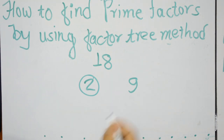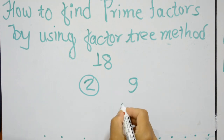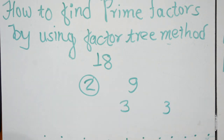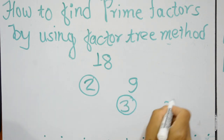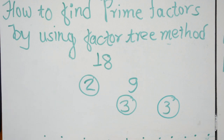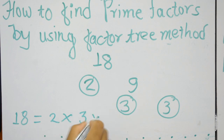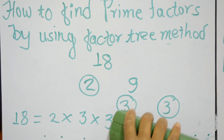9 is not a prime number, so again we have to write the factors of 9 — 3 times 3 are 9. This 3 and the other 3 are both prime numbers. So the prime factors of 18 are 2 × 3 × 3. Let's take one more example.